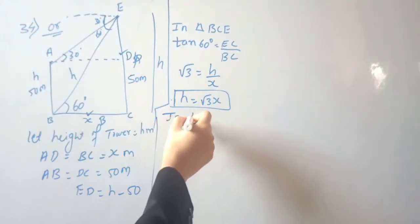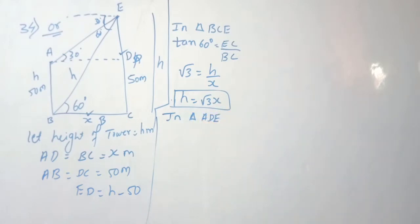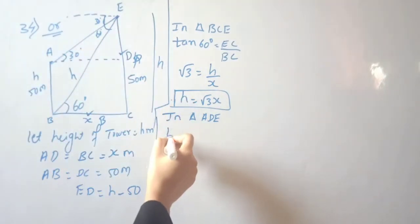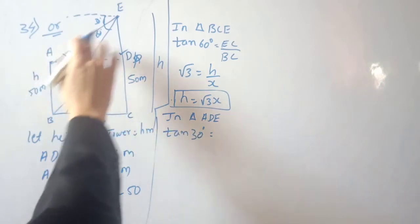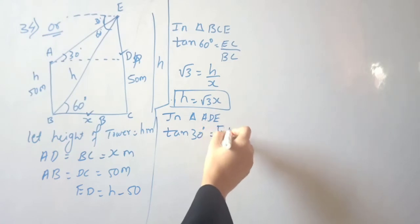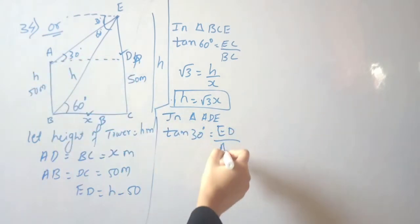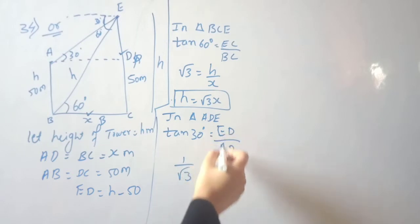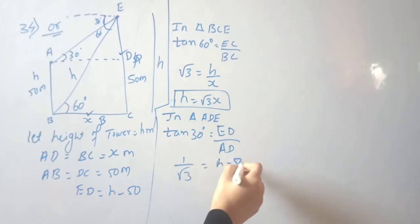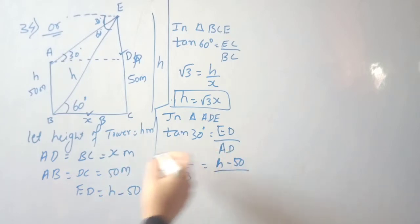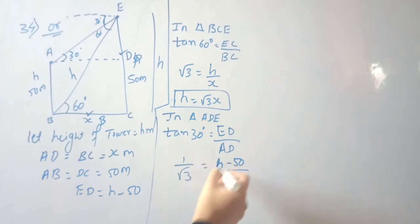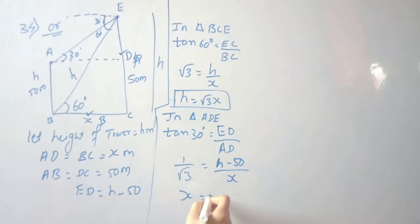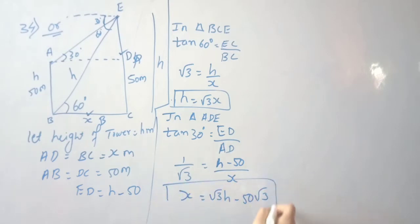Now take the second triangle: ADE. The angle at E is 30 degrees. So tan 30° = perpendicular / base = ED / AD. Therefore tan 30° = (h − 50) / x. The value of tan 30° is 1 / root 3, so 1 / root 3 = (h − 50) / x. By cross multiplication: x = root 3 × (h − 50).